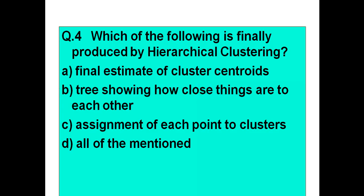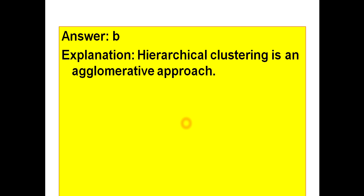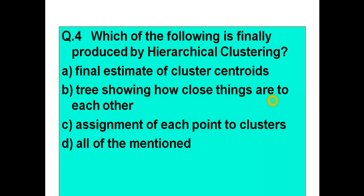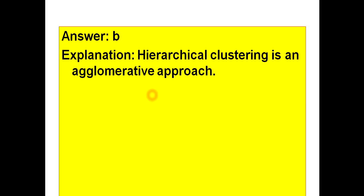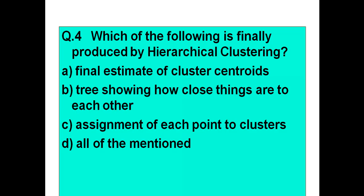The next question is: which of the following is finally produced by hierarchical clustering? Option A: final estimate of cluster centroids. Option B: a tree showing how close things are to each other. Option C: assignment of each point to a cluster. Option D: all of the mentioned. The answer is option B — a tree showing how close the data points are to each other. Hierarchical clustering is an agglomerative approach, which I have explained with examples in one of my previous lectures.